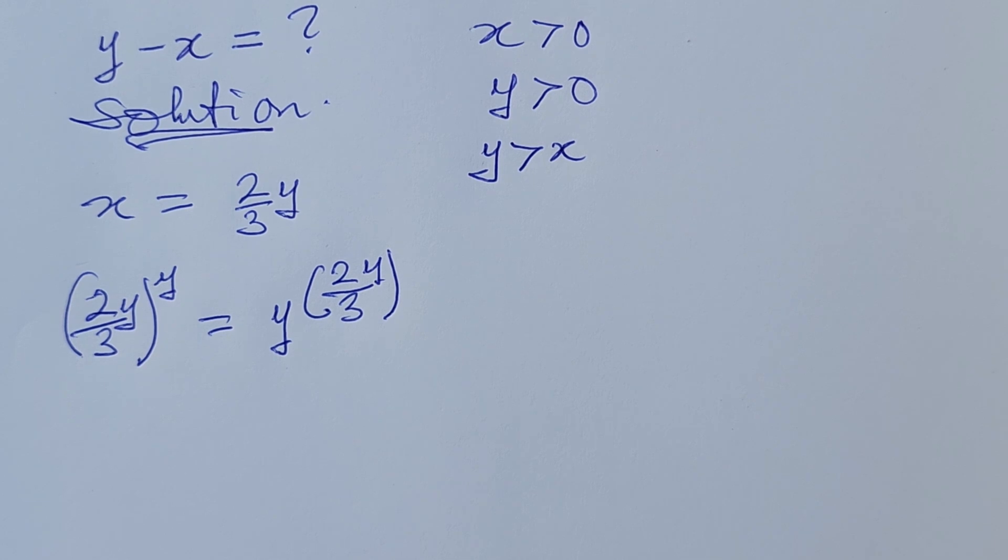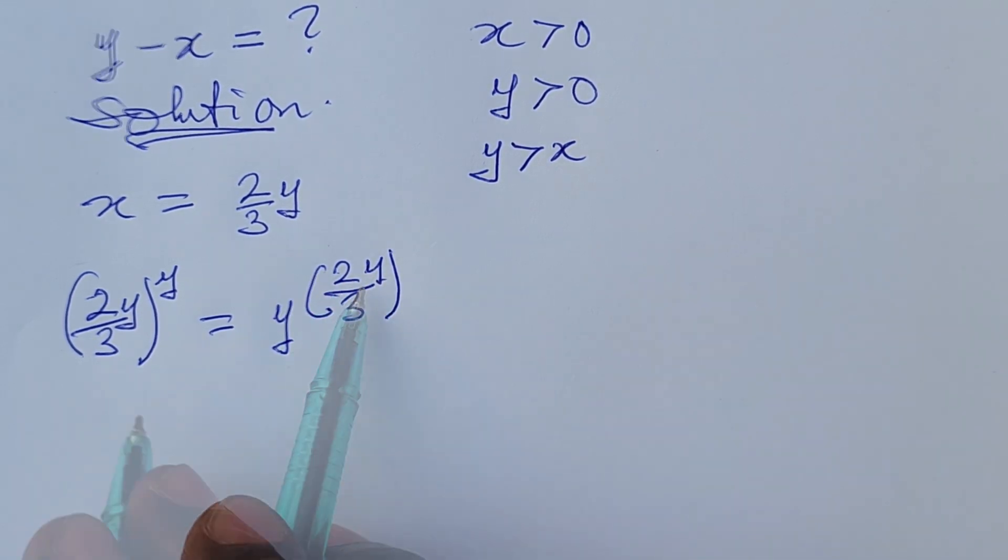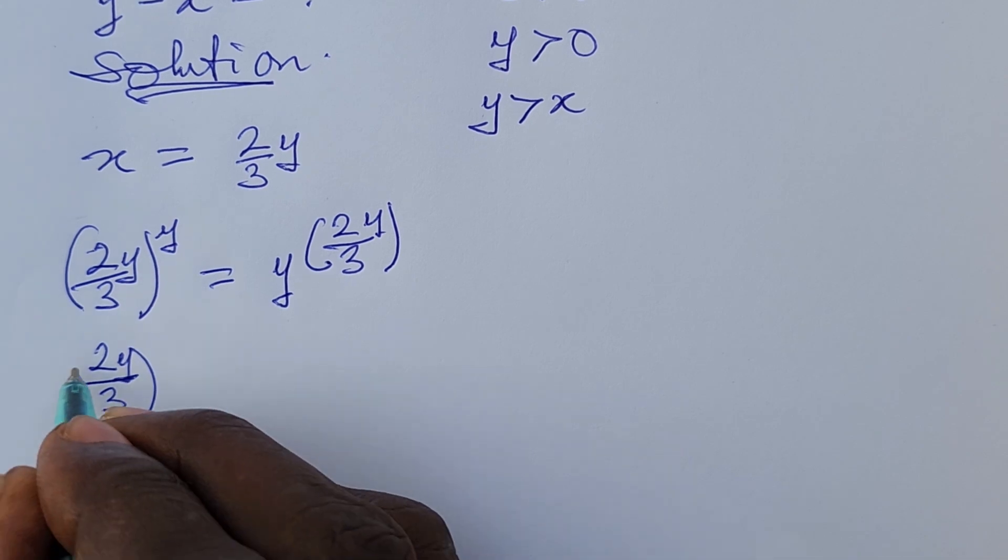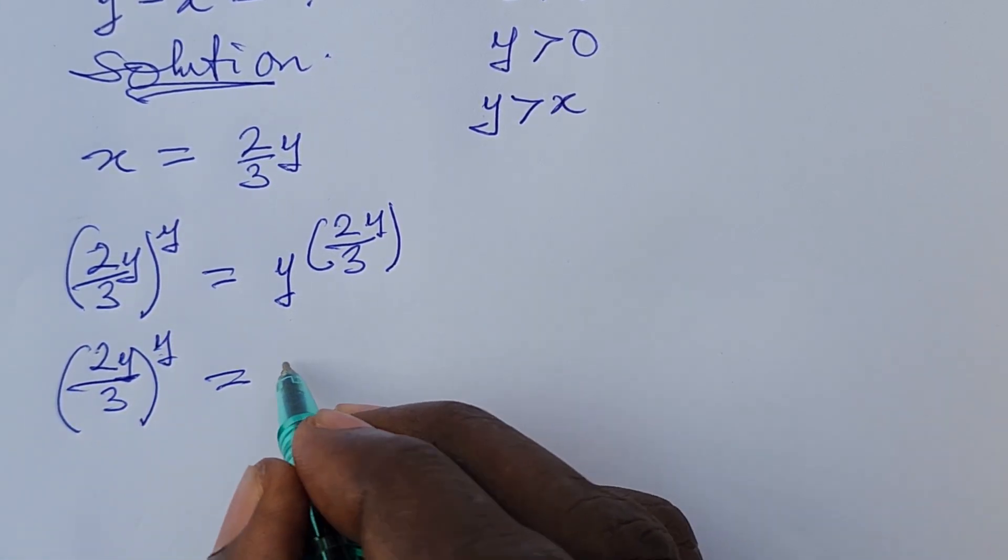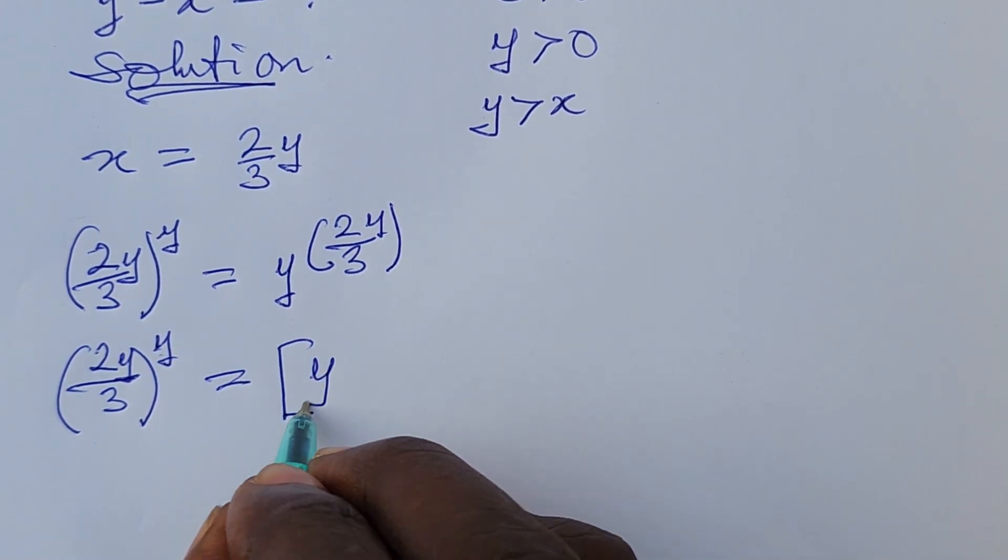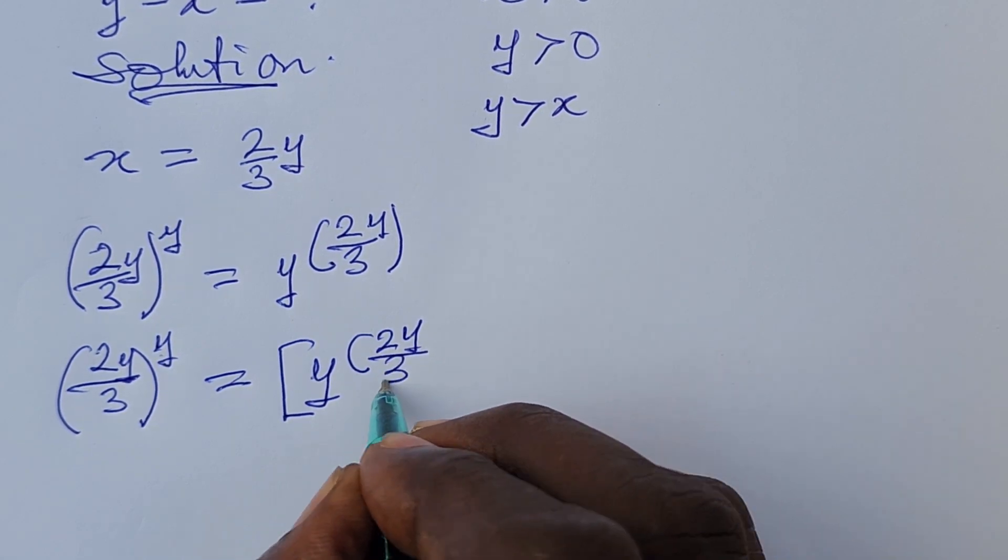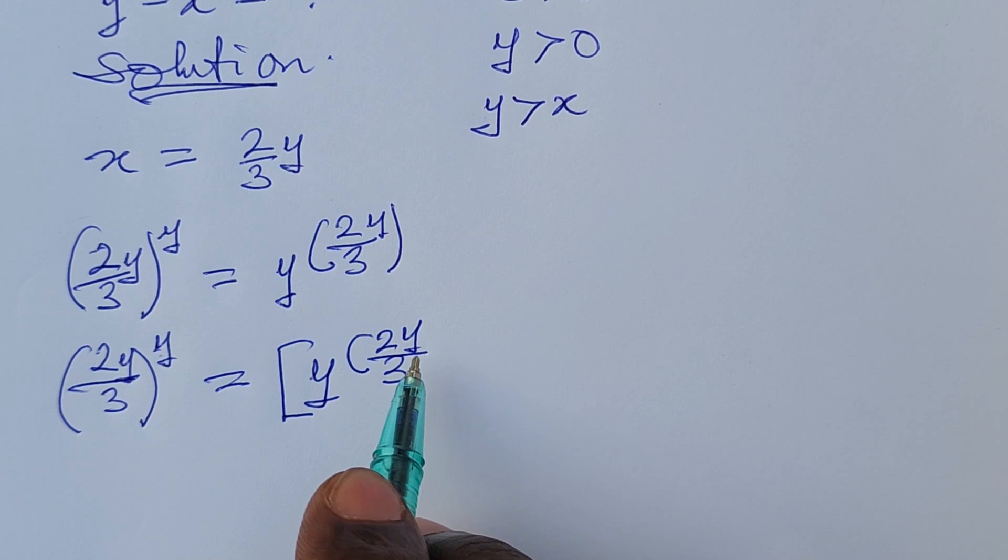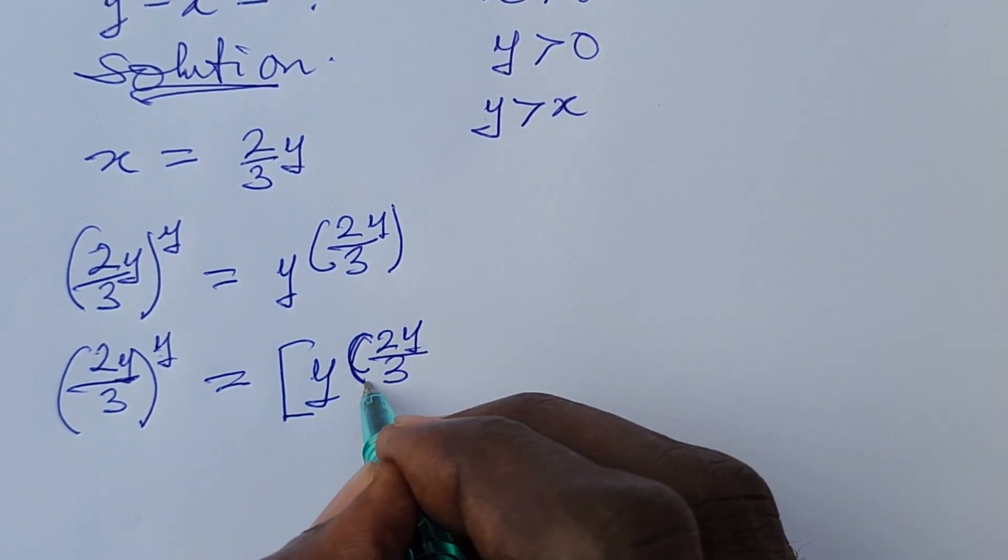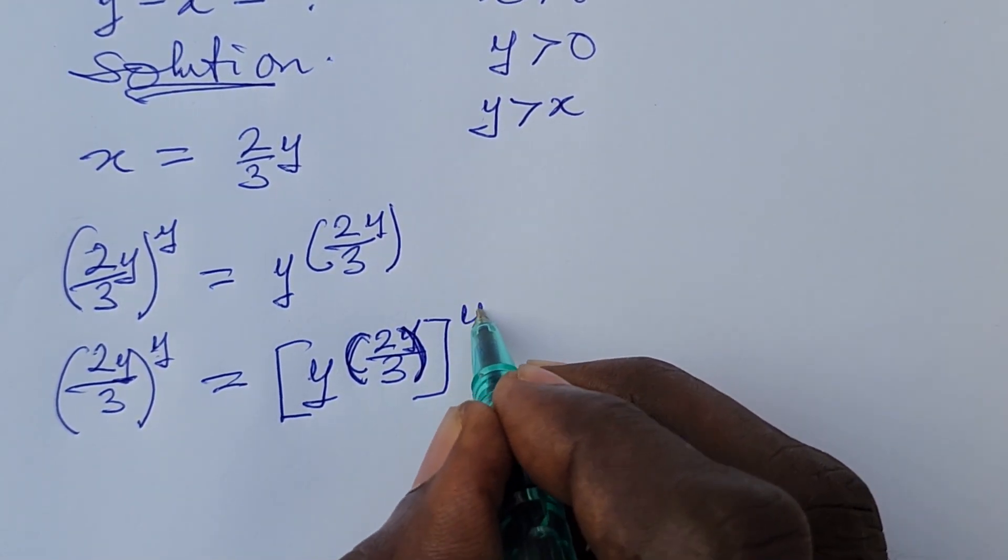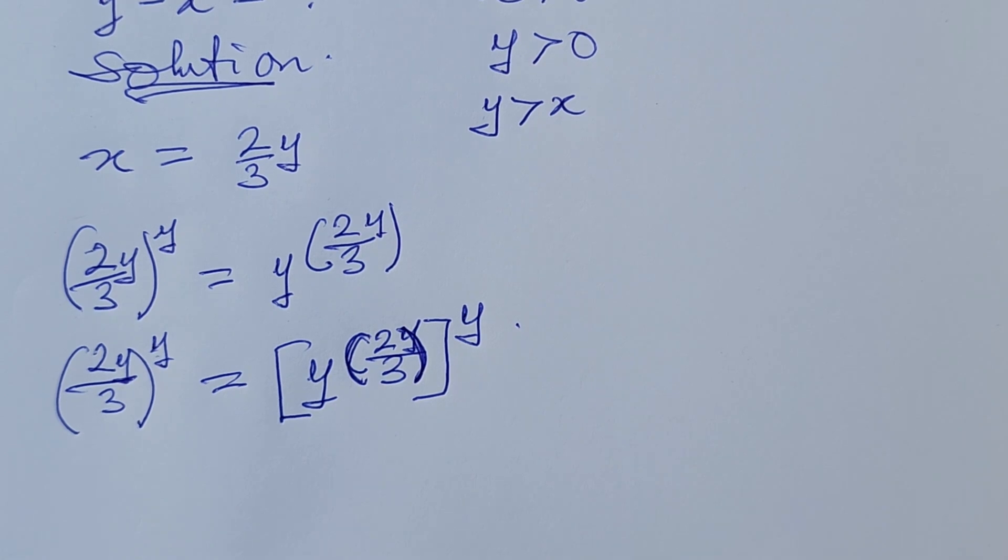So what do we do here? We want to make either the base to be the same or the exponent to be the same. I want to rewrite this exponent. This will give us 2y over 3 all to the power of y equals y to the power of 2y over 3. If I decide to bring out this y there, we're going to have 2 over 3 all to the power of y. This hasn't really changed anything.